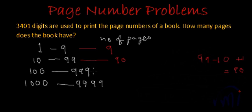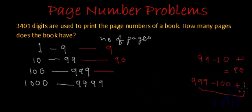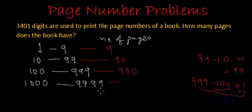How many pages will have 3-digit page numbers? It will be 999 minus 100 plus 1. 999 plus 1 is 1000, and 1000 minus 100 is 900. So there will be 900 pages with 3-digit page numbers, from page 100 to 999. And similarly, if the book goes to 9999, there will be 9000 pages with 4-digit numbers. But let's first check whether our digit count reaches that far.